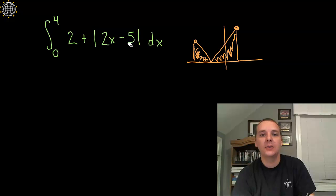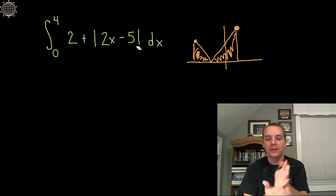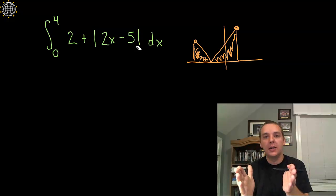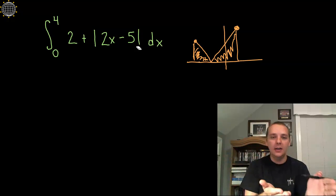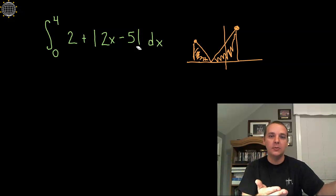Well basically the vertex happens where 2x minus 5 equals 0, because 0 is kind of your dividing line between positive quantities, in which case the absolute value would leave it alone and just remain 2x minus 5, versus the negative quantities, in which case you would have to change the sign with those terms being negative.